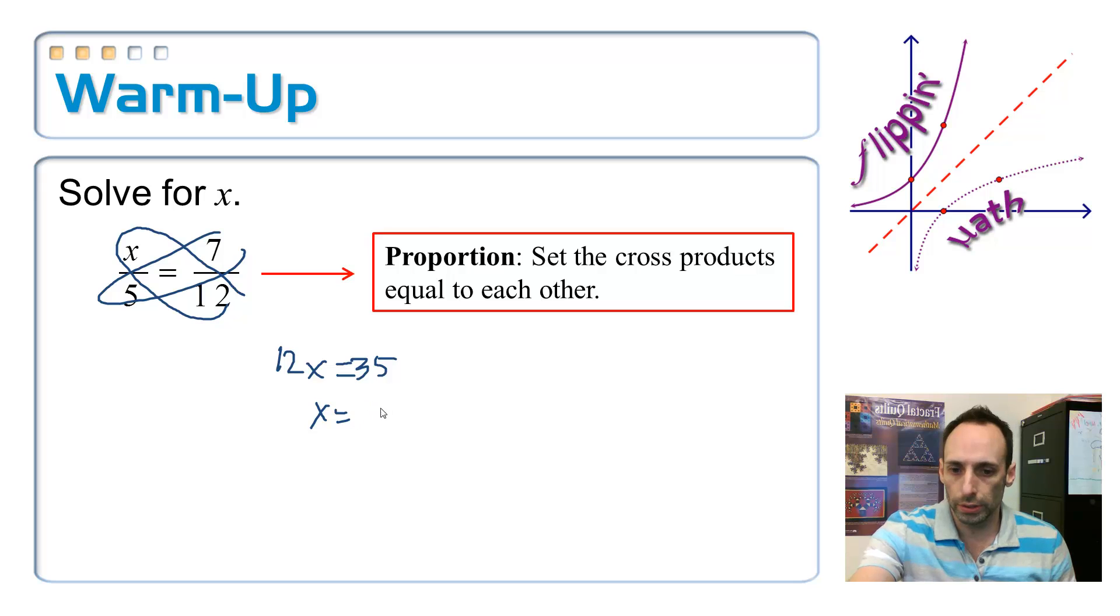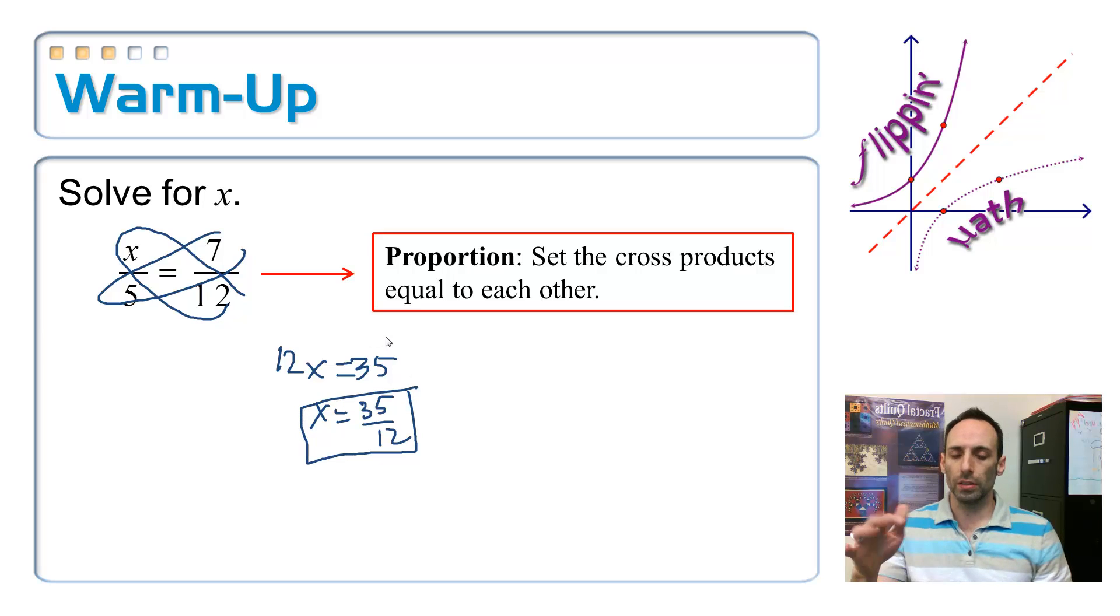So x is equal to 35 over 12, and it's done. You can put it in the calculator if you wanted to, but that's okay.